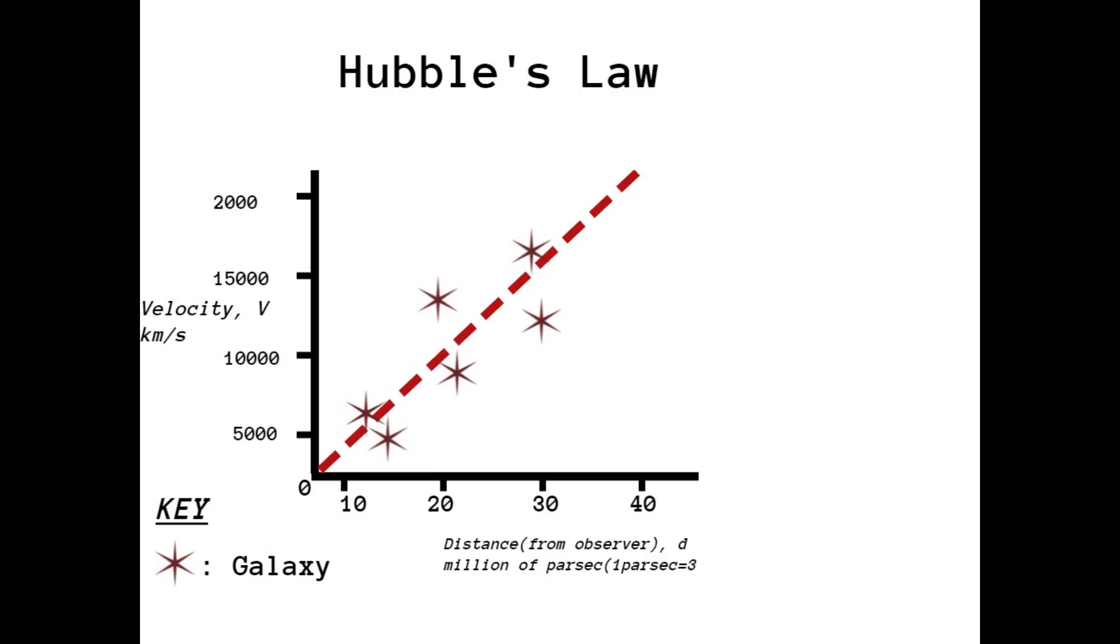Hubble drew this data onto a graph and made a straight line through it, showing that velocities of galaxies was directly proportional to the distances from the observer, which in that case was Edwin Hubble.